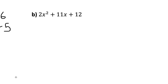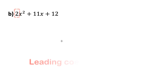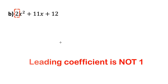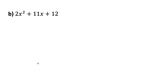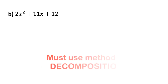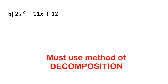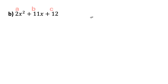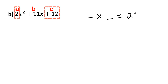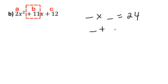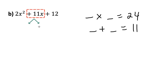Let's try part b — again a quadratic where the leading coefficient is not one, it's 2. First check if 2 can be removed as a common factor: does 2 divide evenly into 11 and 12? No. So we'll have to factor this the long way using decomposition. We find numbers with a product of a times c — 2 times 12 = 24 — and a sum of the b value, 11.